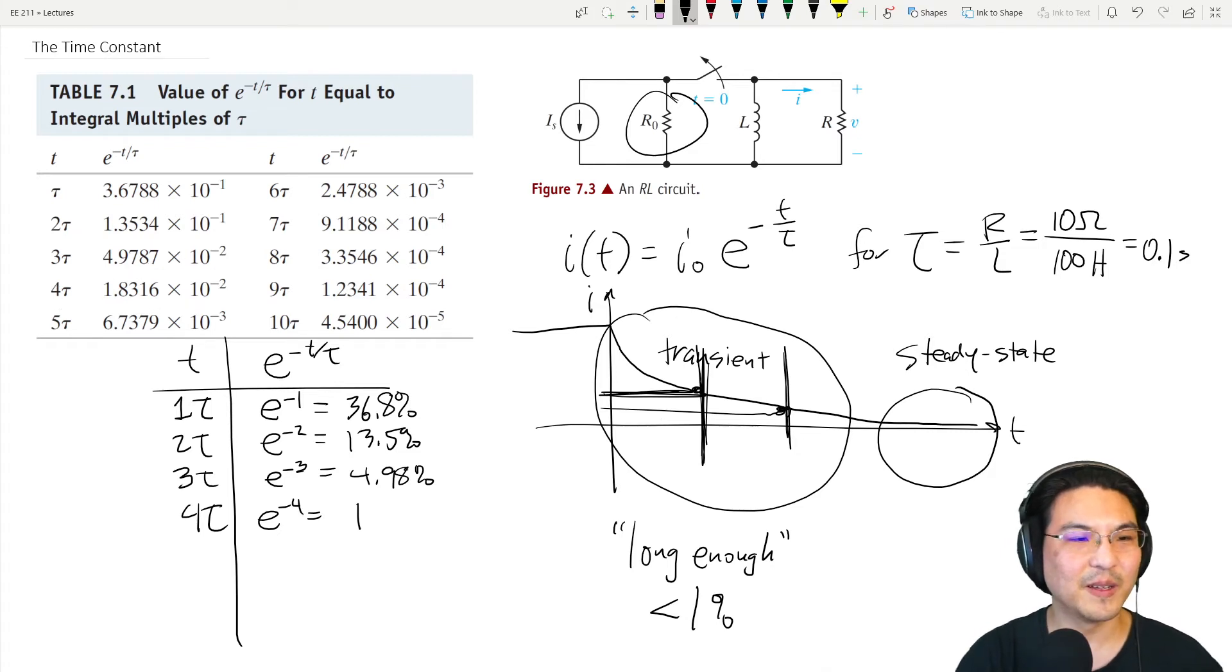If you wait four time constants, 1.83 percent. Wait five time constants, e to the minus five, punch in the calculator, is 0.67 percent. Already, if you wait five time constants, your signal is already less than one percent of the original.